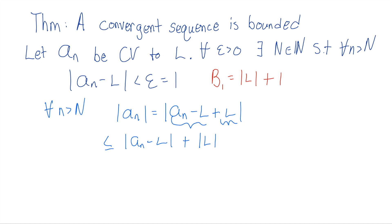That's just the triangle inequality. Now we know this part, we said that that's less than epsilon, which we're calling one. So this has to be less than one. And we still have that absolute value of L. Hey, maybe you can see what's happening here. One plus L in absolute value. That's the same as L in absolute value plus one. This is b1. So what have we really shown here? We've shown that our sequence in absolute value is less than b1.